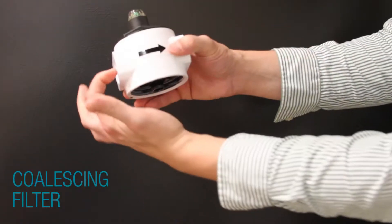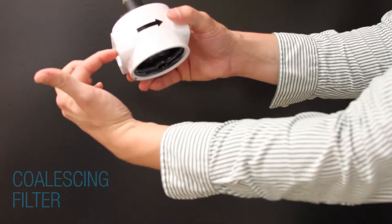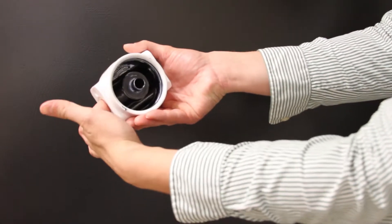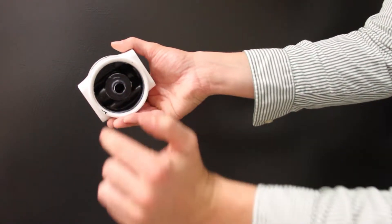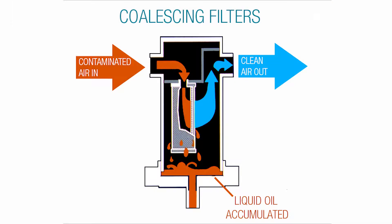On a coalescing filter, you will notice that the flow is going into the center of the element and will filter through the center to the outside of the element. Contaminants will exit through the sides and drain to the bottom of the filter.